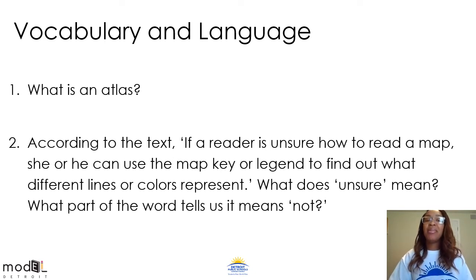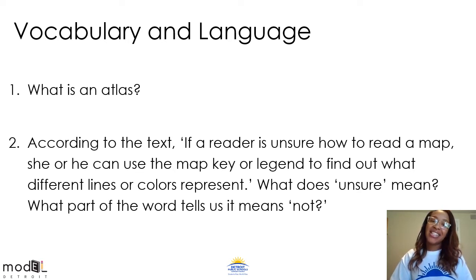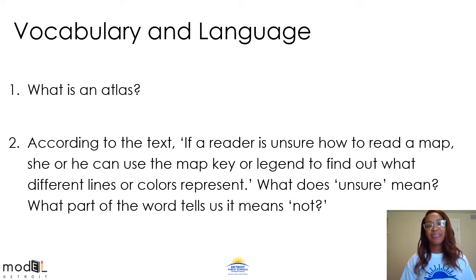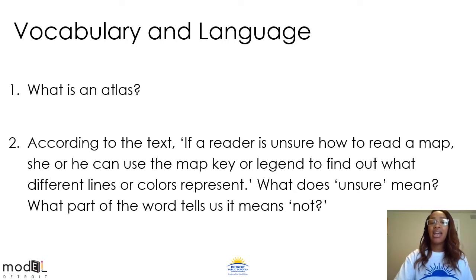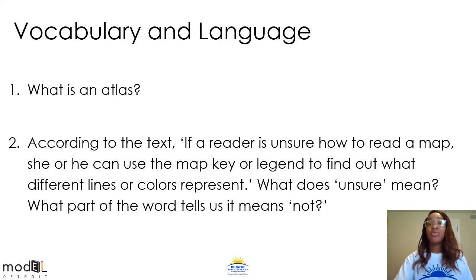All right. Now it's time to answer some vocabulary and language questions about our engagement text. What is an atlas? That's right. An atlas is a book of maps. Let's move on to our second question. According to the text, if a reader is unsure how to read a map, she or he can use the map key or legend to find out what different lines or colors represent. What does unsure mean, and what part of the word tells us it means not? That's absolutely correct. Unsure means something that you are not sure of. The UN prefix tells us it means not.